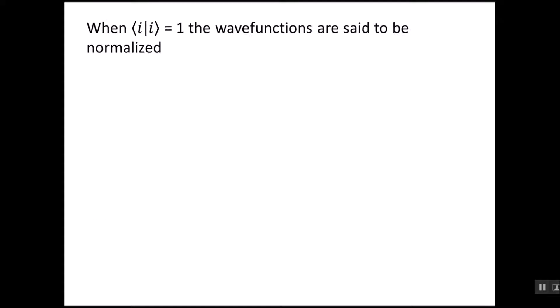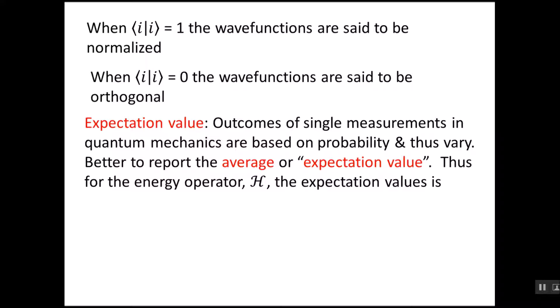Another behavior that these wave functions have is if we multiply two of the same wave functions together and get one, the wave functions are said to be normalized. If we integrate two of the wave functions over all space and get zero, they are said to be orthogonal. Usually we like wave functions that have these two properties. They're called orthonormal functions.